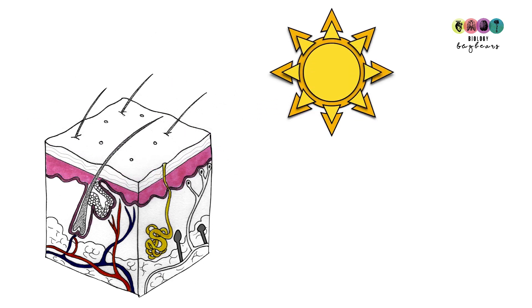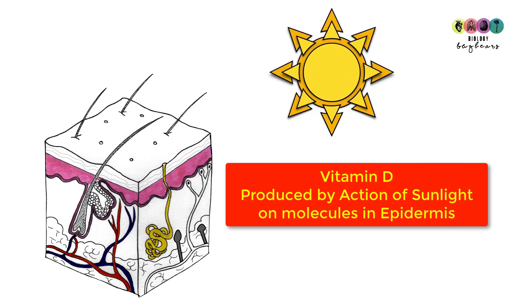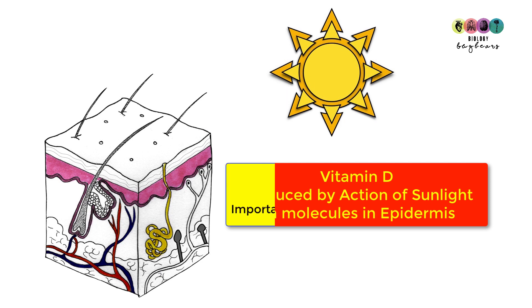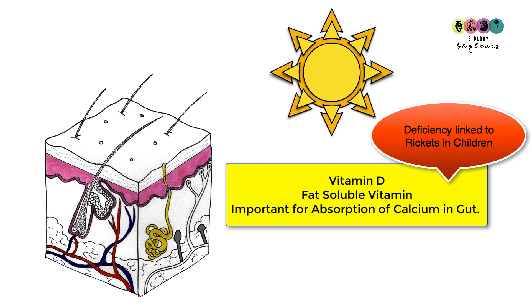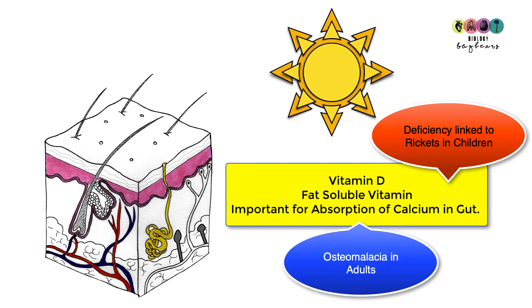Another important role of the epidermis is the production of vitamin D. Vitamin D is produced in the epidermis by the action of sunlight on molecules found there. It's a fat-soluble vitamin important for absorbing calcium from the gut. Deficiency in vitamin D can cause rickets in children and osteomalacia in adults.